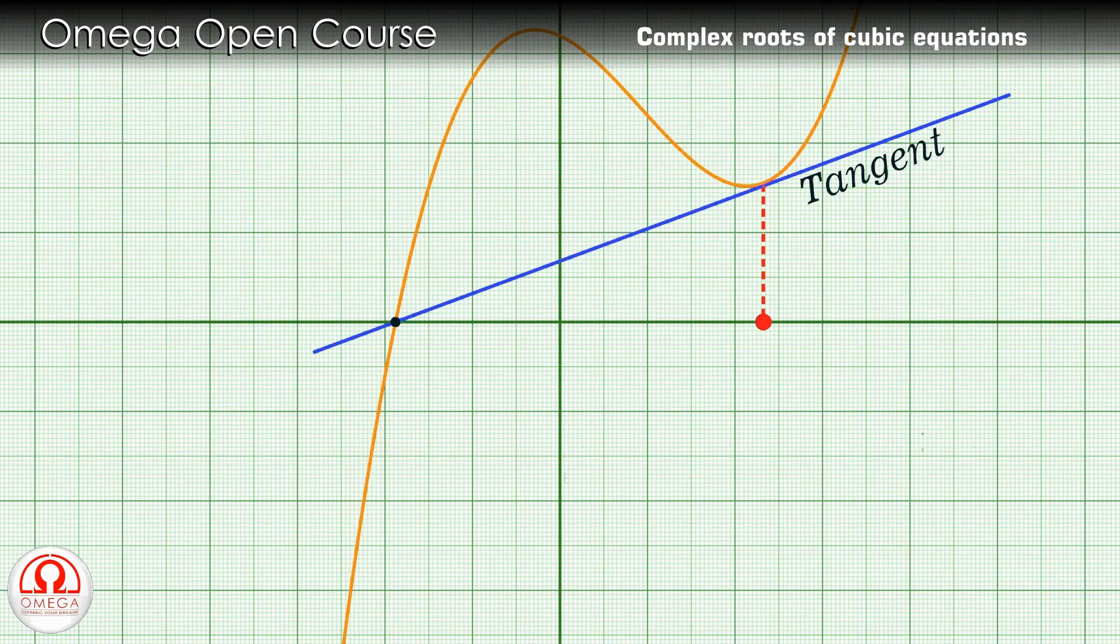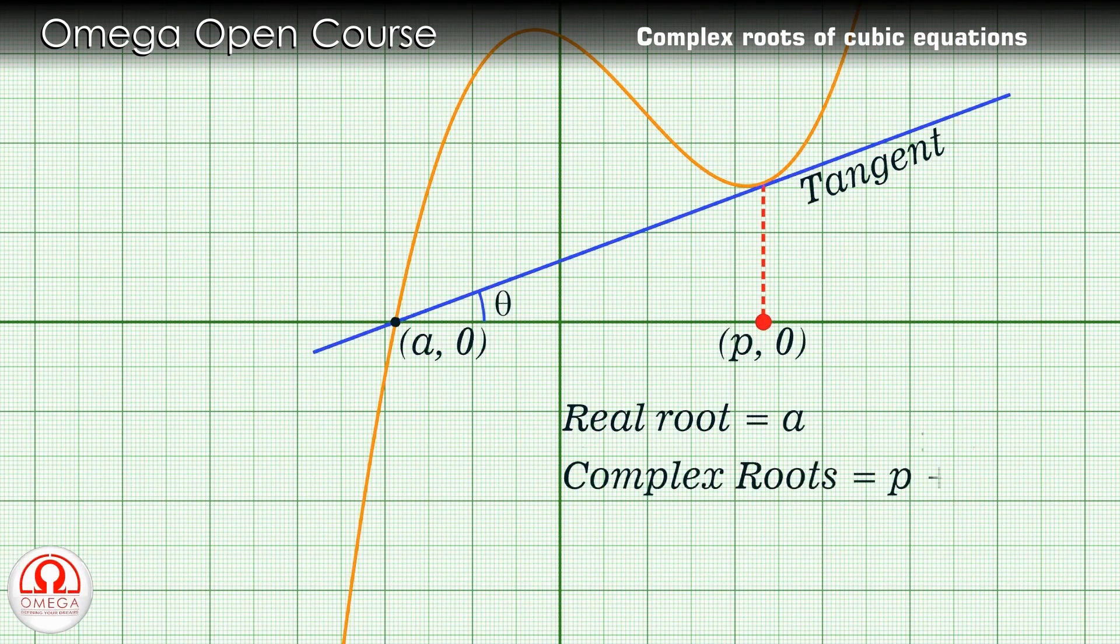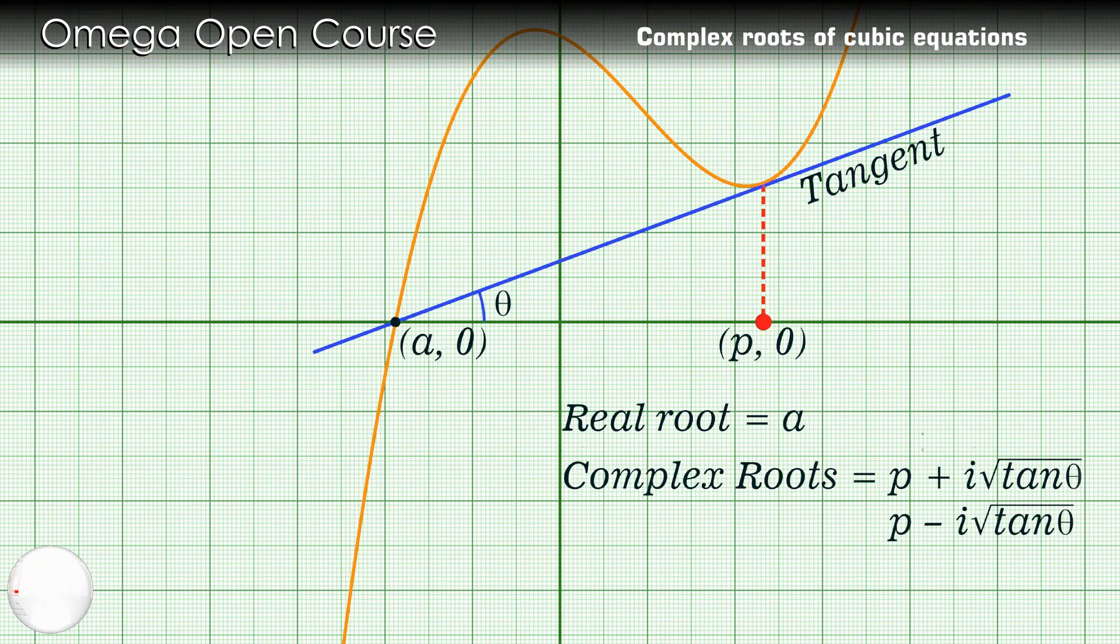So, let a cubic expression whose graph intersects the x-axis at x equals a. When you draw a tangent to the curve from the point of intersection, it touches the curve at the point whose x-coordinate is p and the tangent makes an angle theta with the x-axis. Then, the real root of this expression is a and the complex roots are p plus i times root of tan theta and p minus i times root of tan theta.